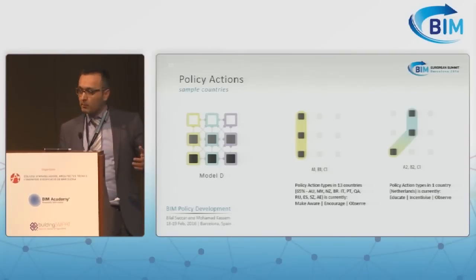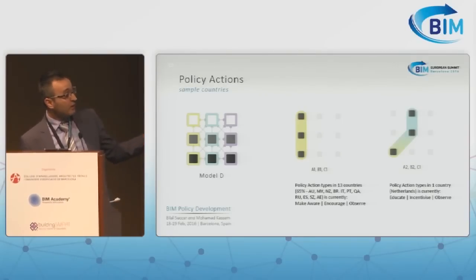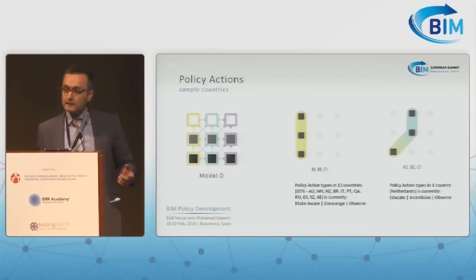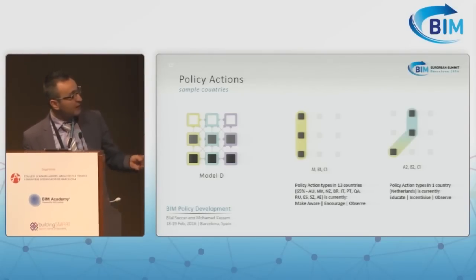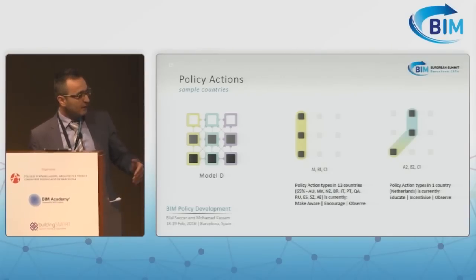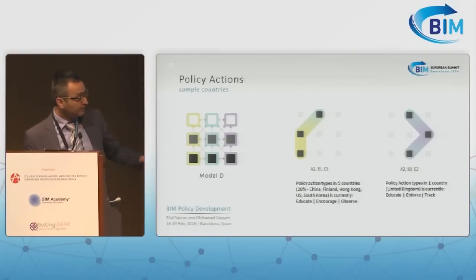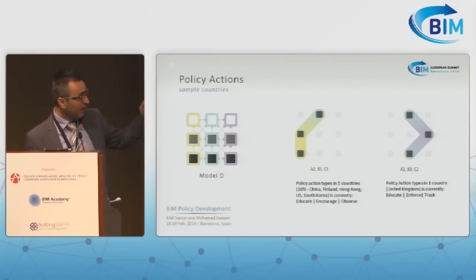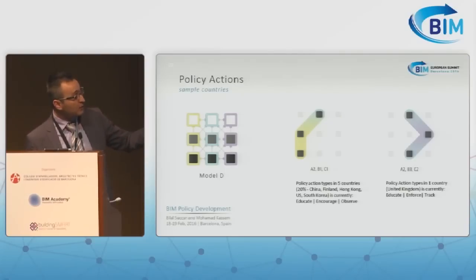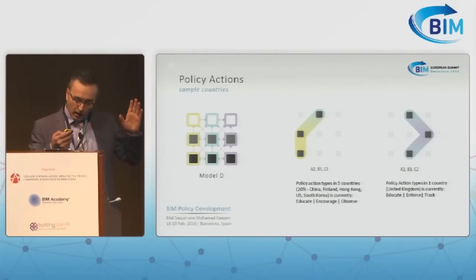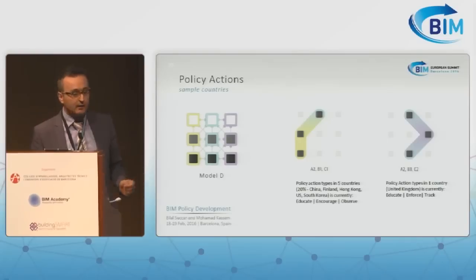The next model maps policy actions across countries. Again, 65% of countries have a fully passive policymaker approach in terms of communication, engagement, and monitoring. The Netherlands has a slightly different approach with two active elements — the policymaker is educating and incentivizing the industry to adopt BIM. In five countries, about 20%, we found a pattern of educating, encouraging, and observing — mixing active and passive elements. Finally, the UK is different from all other countries, with a mixture that is mostly active and assertive: education, enforcement, and tracking.